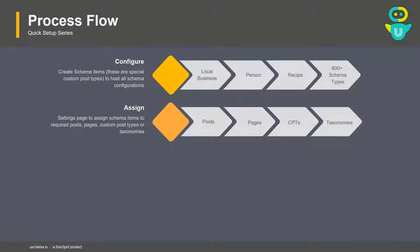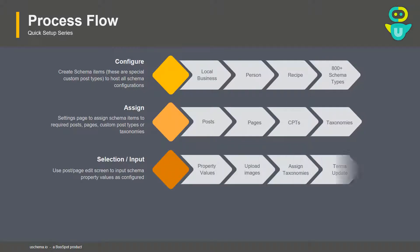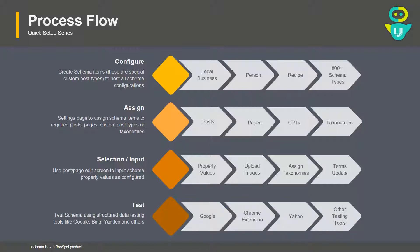We can even interlink these schema items. In the third step, we input the data for our created or configured schema item — adding property values, uploading images, assigning taxonomies, and so on. As a final step, we test whatever schema we have added using the Google Schema Tester, a Chrome extension, or testing tools from Yandex, Bing, or other search engines.